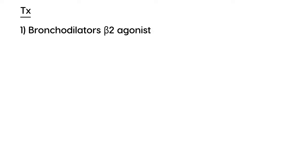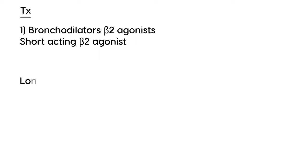Now I'll talk briefly about the medications involved, then give step-by-step instructions on how to treat asthma. The main players are bronchodilators — for obvious reasons, since bronchoconstriction is part of the pathophysiology. You want medications that will help dilate the airways, known as beta-2 agonists.